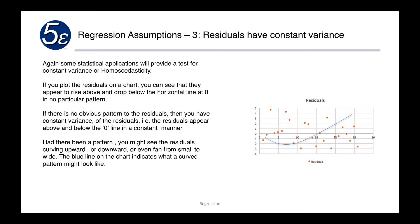Some statistical applications will provide a test for constant variance. If you plot the residuals on a chart, you can see that they appear to rise above and drop below the horizontal line at zero. That horizontal line at zero is basically our line that says the residuals are zero. Everything above the line is positive residuals, everything below is negative residuals. If we have constant residuals, the plots will go above and below the line in a constant manner.